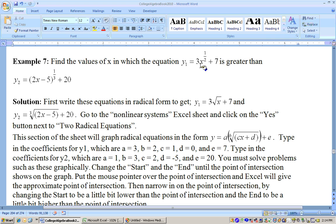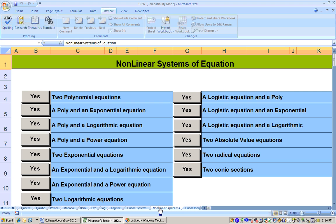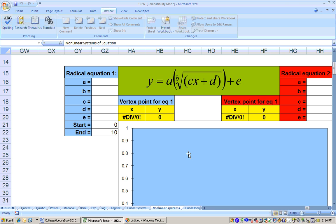3x to the 1 half is the same as 3 times the square root of x. And then this right here, 1 third power, is the same as cube root. So these are two radical equations. So this is definitely nonlinear systems of equations. So we want to go to the nonlinear system sheet and we're dealing with two radicals. So you want to click on that.